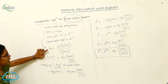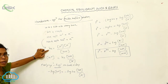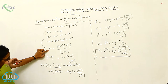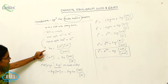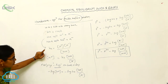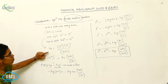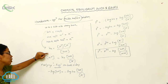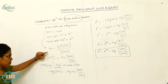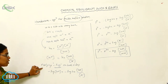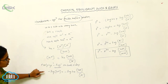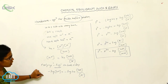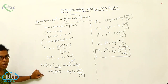For the weak acid, I can write the equilibrium constant Ka. Ka is equal to the concentration of products by the concentration of reactants. From that, concentration of H⁺ is equal to Ka × [HA] / [A⁻]. Next, I am applying minus logarithm on both sides, so minus log [H⁺] = minus log of Ka × [HA] / [A⁻].